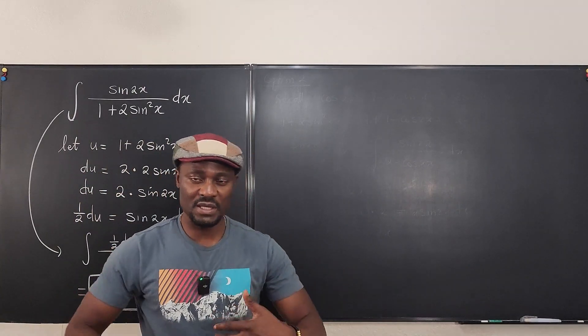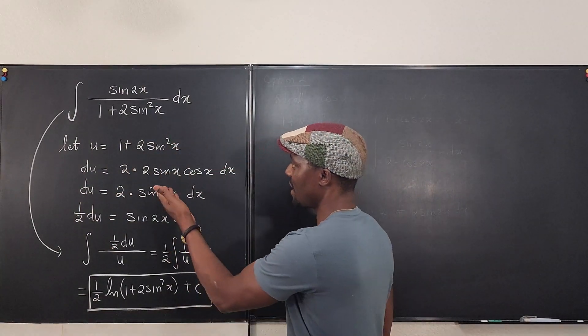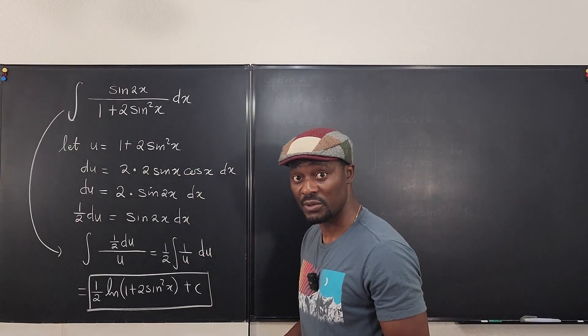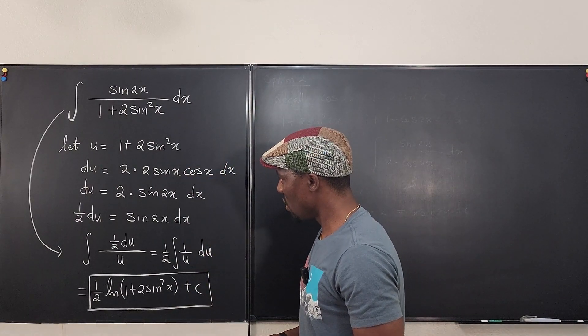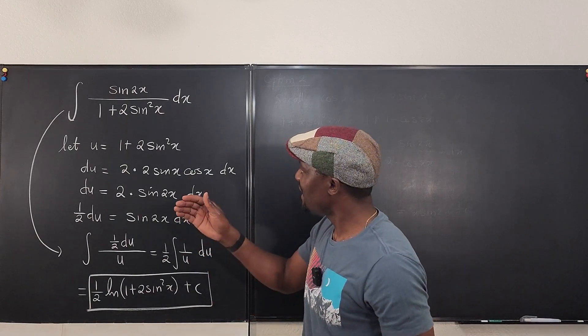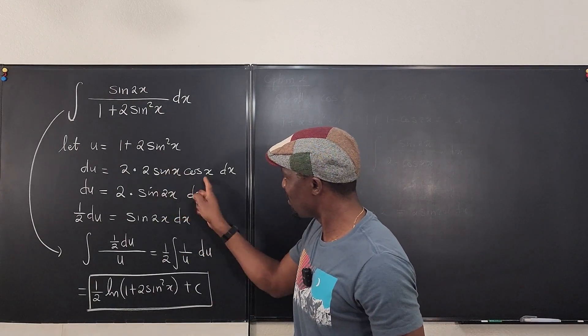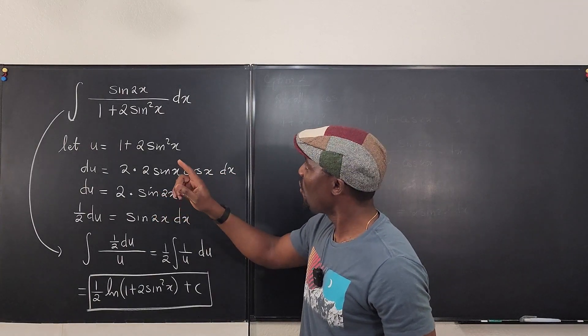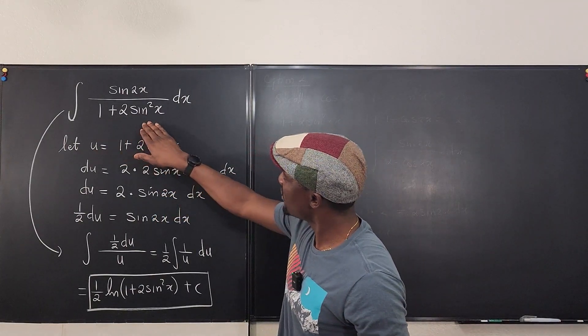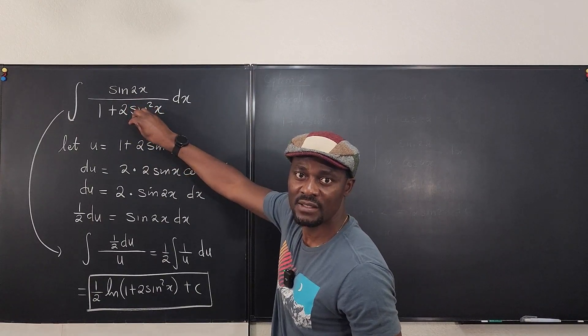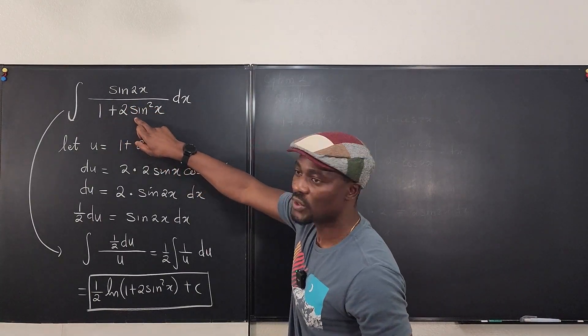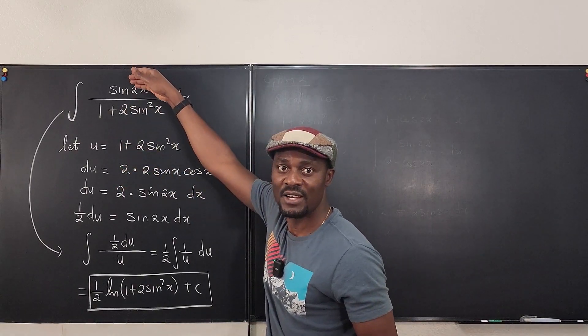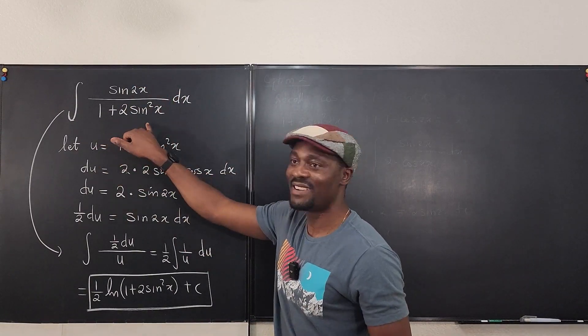But what was I thinking before? Because sometimes you may not see that the derivative of the denominator will give you the numerator for u substitution. And it might be hard. So for me, I didn't really see that this was going to show up here. I didn't think ahead like that. What I did was to say, can I write the denominator to look like cosine 2x?